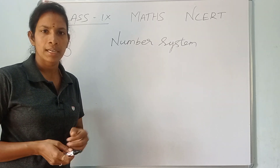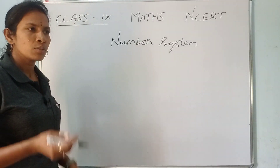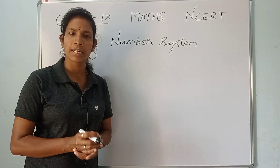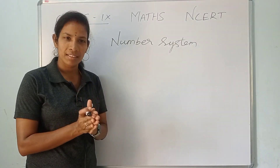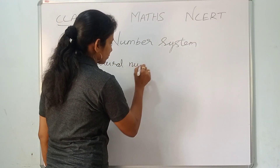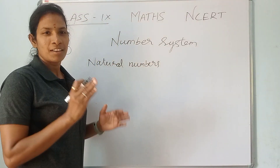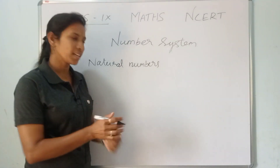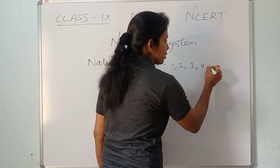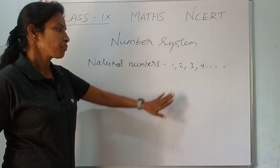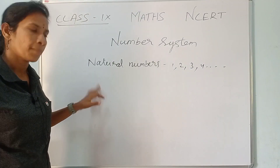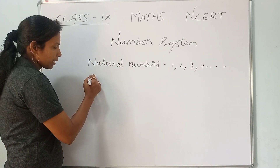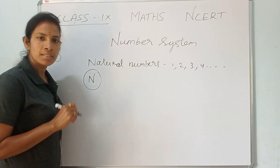How many types of number system are there? The first type we will see is Natural Numbers. Natural numbers start from 1 and go up to infinite numbers. Natural numbers are denoted by N.